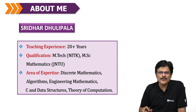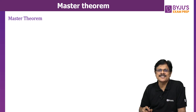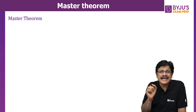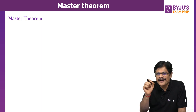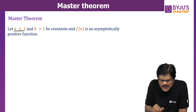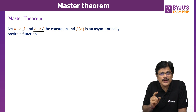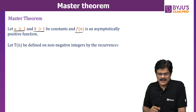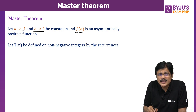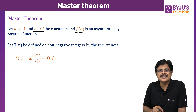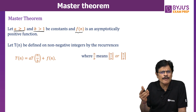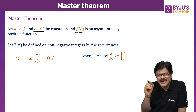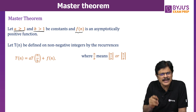Without wasting much of your time, let me start with the concept of today, that is Master Theorem. Master Theorem is the standard technique for solving a special type of recurrence relation known as divide and conquer recurrence relation. In the recurrence relation, you will find two constants A and B, where A should be greater than or equal to 1 and B should be greater than 1. And there is a function F(n); it should be asymptotically positive. Let T(n) be defined on non-negative integers by the recurrence T(n) = A·T(n/B) + F(n). N/B may be floor or ceiling of N/B, but asymptotically the effect is negligible, so we simply take N/B only.